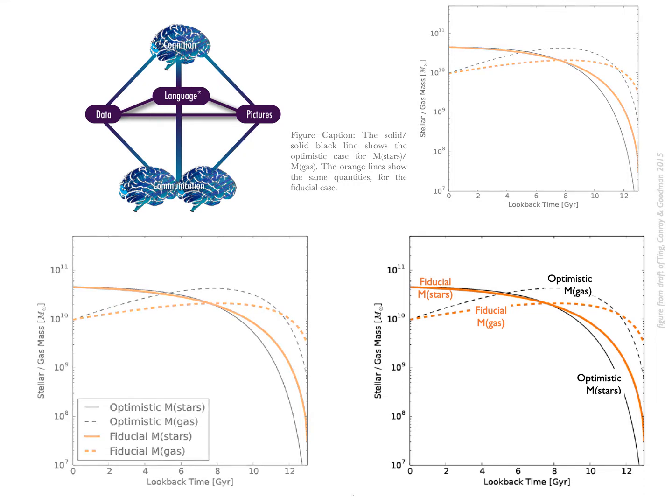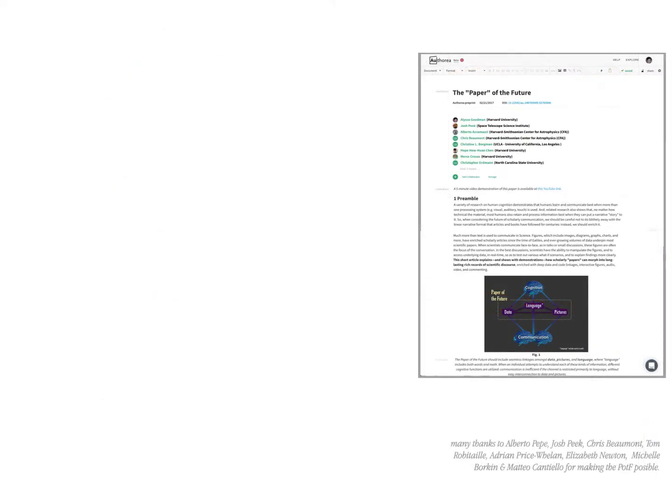Hopefully you agree that that last version of the figure puts much less of a cognitive load on the reader and lets them focus much more on the information in the plot than trying to figure out what the plot means. So that's enough for our simple example.